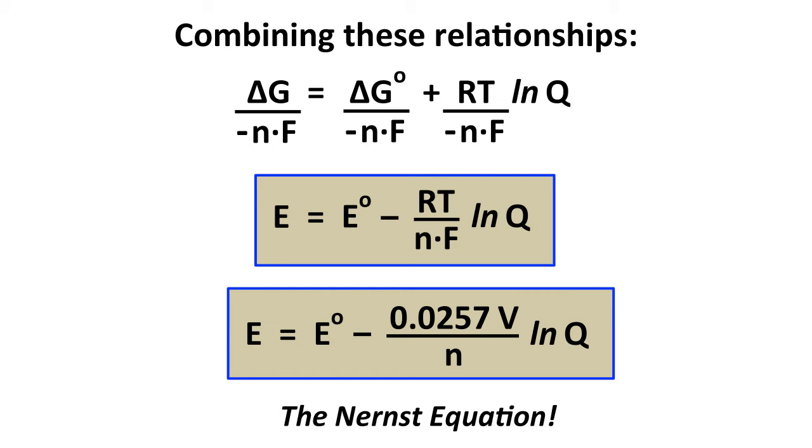This is known as the Nernst equation, and it's the way we deal with non-standard conditions for electrochemical or oxidation reduction processes.